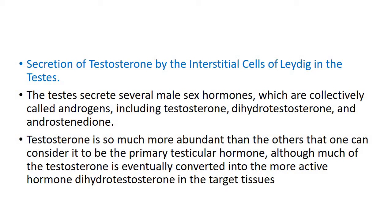Although much of the testosterone is eventually converted into a more active hormone — dihydrotestosterone — in the target tissues. So basically testosterone is produced primarily and is then converted into its active form, dihydrotestosterone.